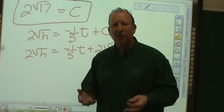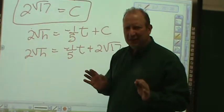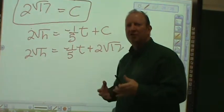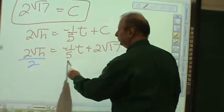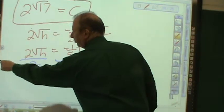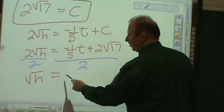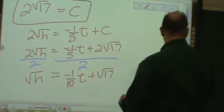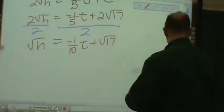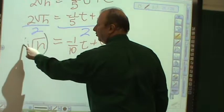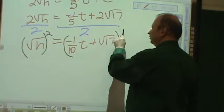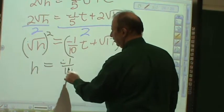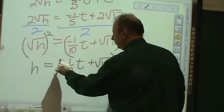And right now, all I'm doing is using my algebra 1 skills. That's it. So, when you look at the calculus, you really have to know your algebra well. There are no shortcuts to it. I'm going to divide both sides by 2. So, ultimately, √h is equal to negative 1/10 t plus √17. And what I'm going to do now is whatever you do to one side, you have to do the other. I'm going to square both sides.